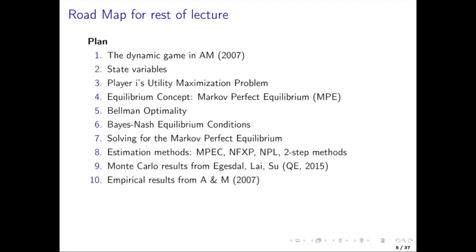Then we'll show the Bellman equation and talk about Bellman optimality implied by the model, and the Bayesian Nash equilibrium conditions that also need to be satisfied in order to achieve the Markov perfect equilibrium, and then how to solve for the Markov perfect equilibrium. Then we'll talk about the various different estimation methods: MPEC, NFXP, NPL, and two-step estimators, once we have developed all this machinery. Then the Monte Carlo results from Pesendorfer and Schmidt-Dengler.